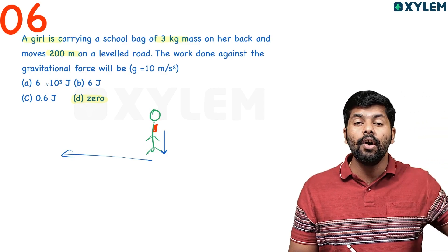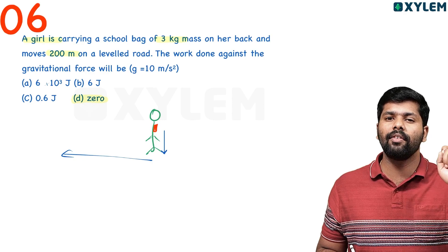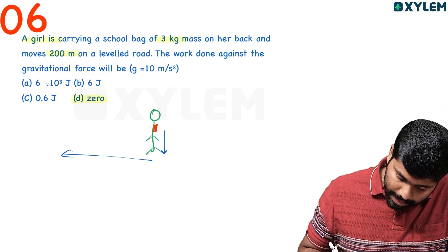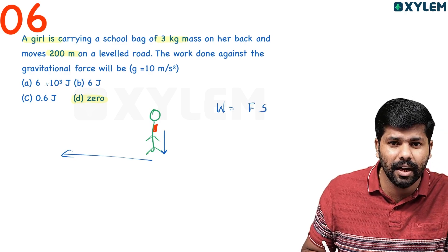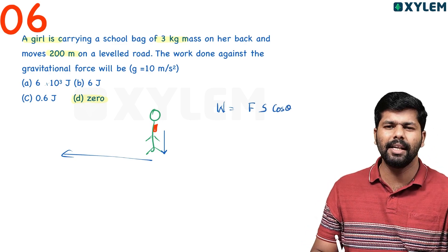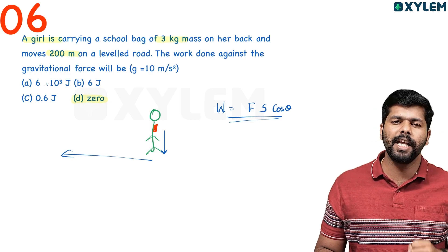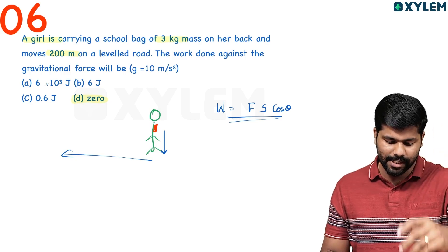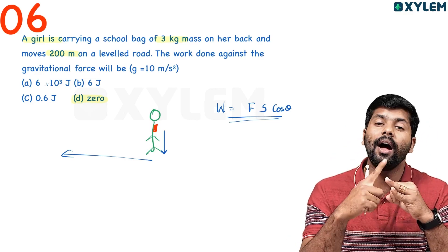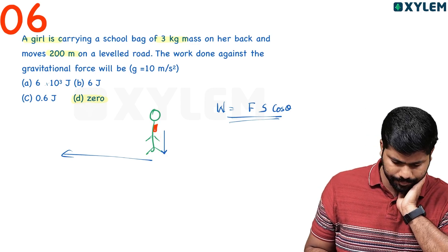Work is actually W equals F·s·cosθ. Here, theta is 90 degrees, so the force component in the direction of displacement is zero. Therefore, the work done is zero. Three conditions when work is zero: force is zero, displacement is zero, or there is no force in the direction of displacement — that is the 90 degree case.